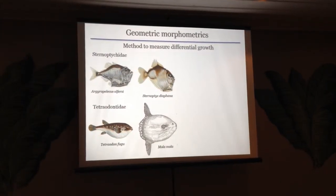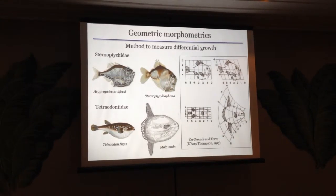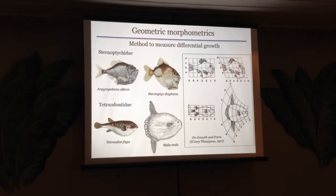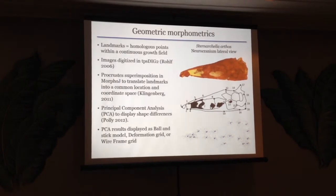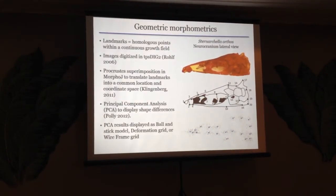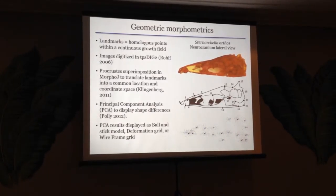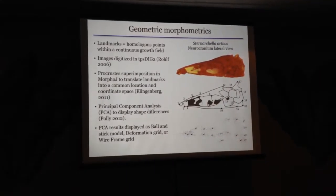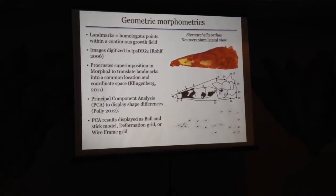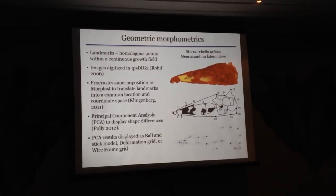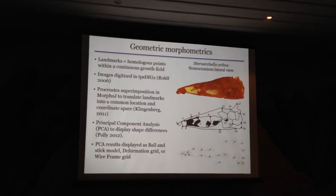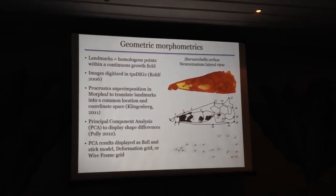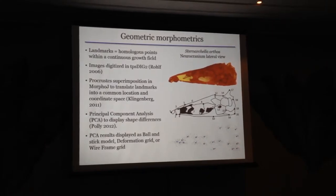The methods are geometric morphometrics, familiar to everybody in this group. These are the kinds of fishes that D'Arcy Thompson was able to warp in his famous diagrams just using grids — now we have nice software analyses that make it a lot easier and more quantitative. We took homologous landmark points from lateral and ventral views of the neurocranium. The bottom plot shows the distribution of those 153 data points — each dot is the mean for each species, and the big blue dots are the means of the means. We used digitized images, TPS spline software, Procrustes superposition, and PCA to display the shape differences. I'll show results in several forms: ball-and-stick models, deformation grids, and wireframe grids.